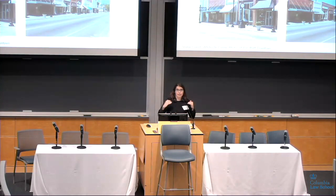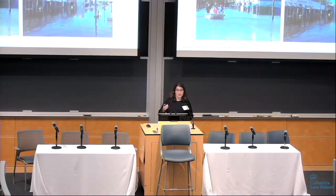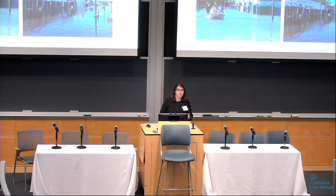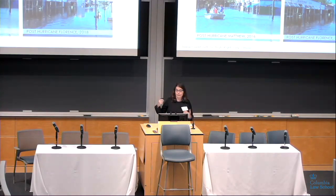Looking at that from the ground level, this is Fair Bluff, North Carolina downtown. The arrows are pointing to the same building, so we're looking at their downtown strip from different sides of the street. This is how it plays out when vulnerabilities are realized. This was actually after two different storms — on the left, post-Hurricane Matthew, paired with a news article about Fair Bluff preparing to rebuild. On the right, the same area after Hurricane Florence in 2018.